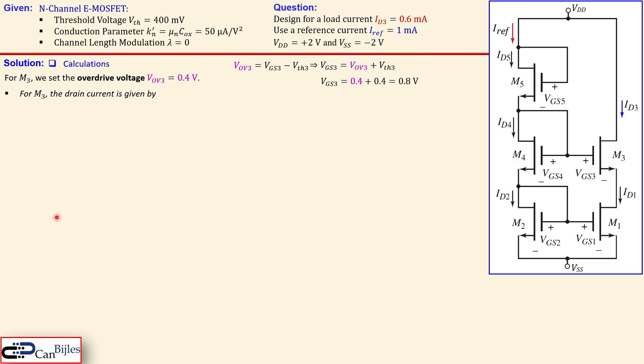Okay for M3 the drain current is given by this expression. We know this from the other videos you see here in the saturation region without the channel length modulation. The drain current is given by this parameter which is the W over L geometry. The K sub N prime which is this conduction parameter depending on the mobility of the electrons and the oxide capacitance times half here.